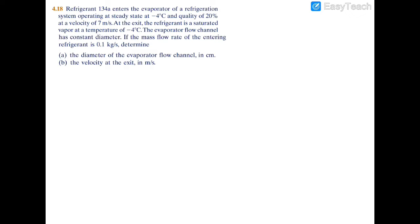In this example, we have refrigerant 134a (R134a) entering into an evaporator. At the inlet, the temperature is negative 4 degrees Celsius with a quality of 20% and a velocity of 7 meters per second. At the exit, the refrigerant leaves as a saturated vapor at negative 4 degrees Celsius. We're given a mass flow rate of 0.1 kilograms per second and we need to find the diameter of the evaporator's flow channel in centimeters, as well as the exit velocity in meters per second.